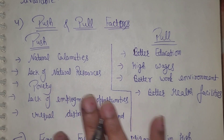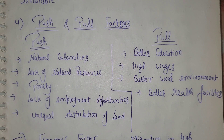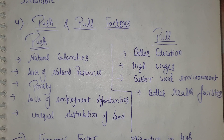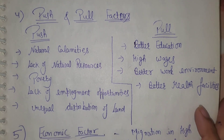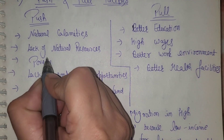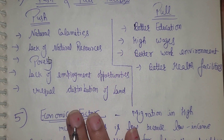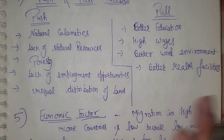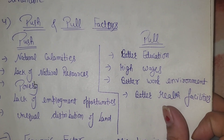Next is push and pull factors. Push factors are generally negative — things that push you out of India: natural calamity, lack of natural resources, poverty, lack of employment opportunities, and no equitable distribution. Pull factors attract you to another nation: better education, good wages, good environment, and a better standard of living. If you had a poor standard of living in India, pull factors like better wages, better health facilities, and better comparative wages make you move.